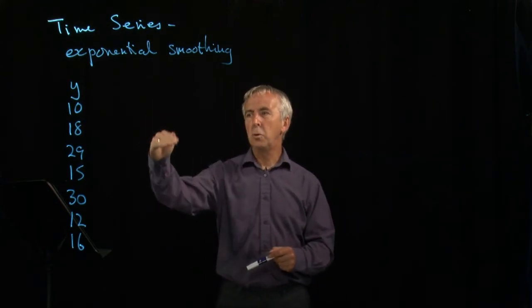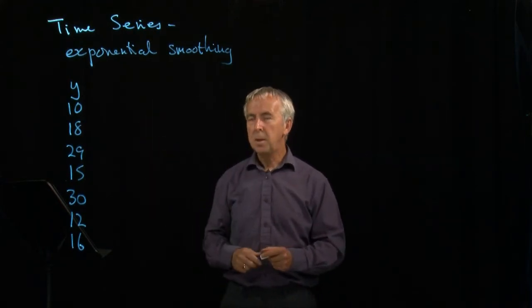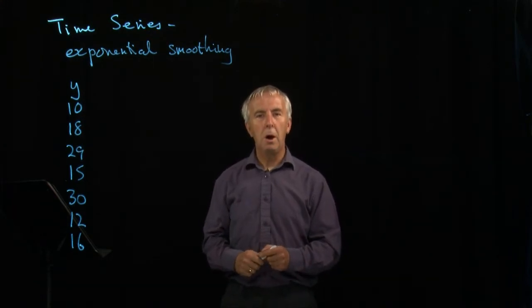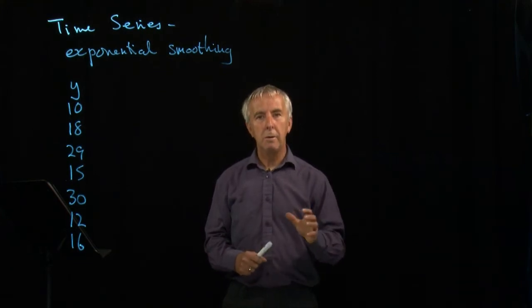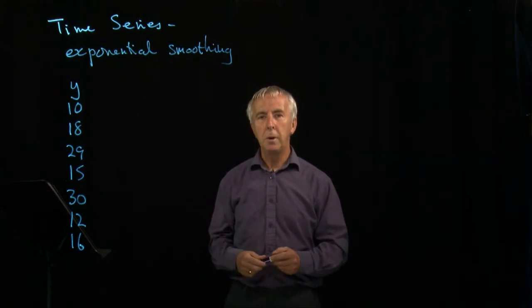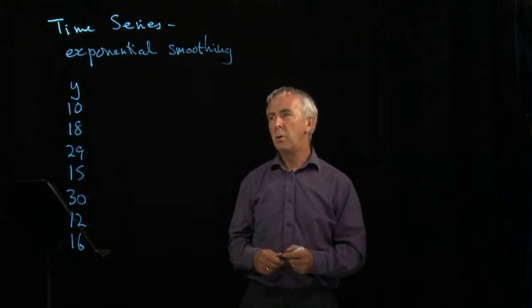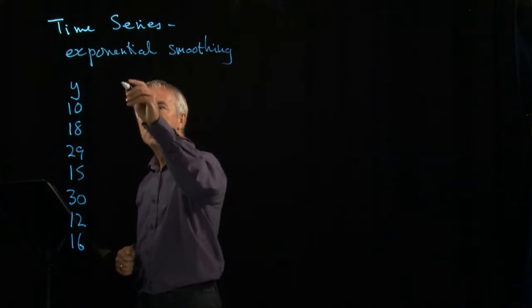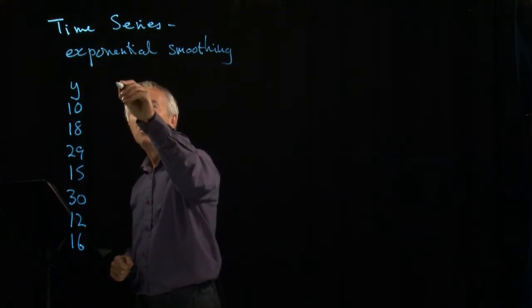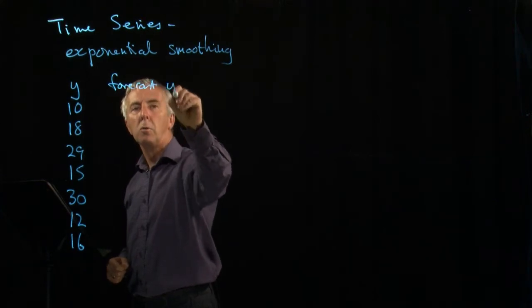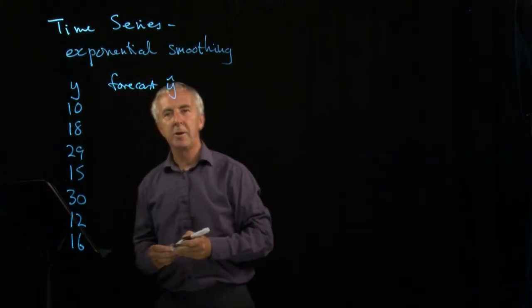Here's some actual data. The idea of exponential smoothing is to make a forecast based on the previous result and then correct it, correct the following forecast by how much the previous one was out. So let me try and explain that. Here is our actual data. Let's make another column now of our forecast data, which we always call y hat. This is our estimate.